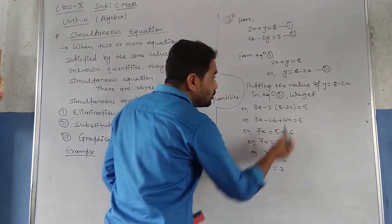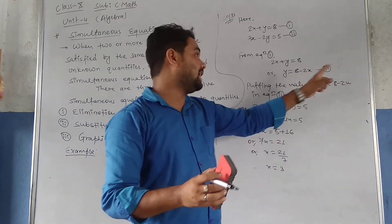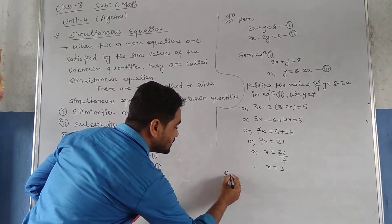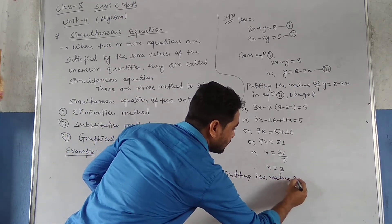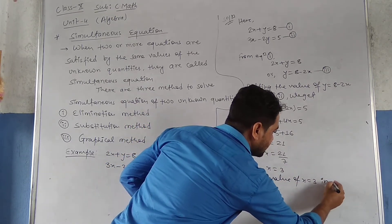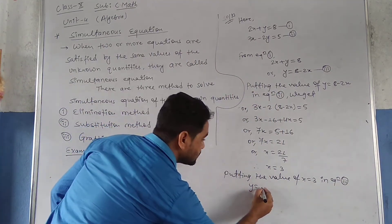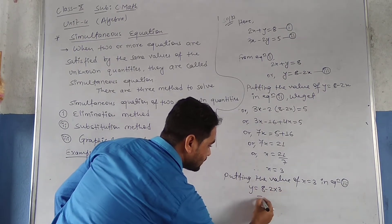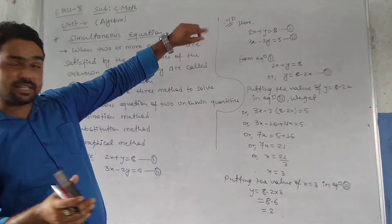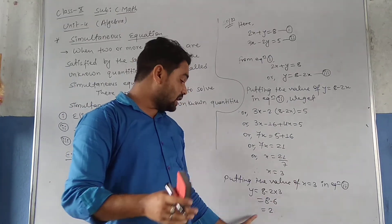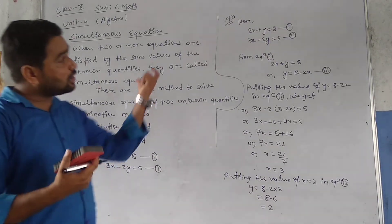Now to get the value of y, we use equation three: y equals to 8 minus 2x. Putting x equals to 3 into equation three: y equals to 8 minus 2 into 3, that is 8 minus 6, which equals 2. So again we get x equals to 3 and y equals to 2, the same result as with the elimination method.